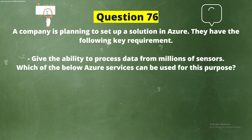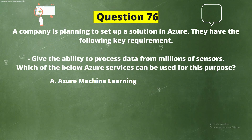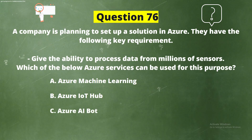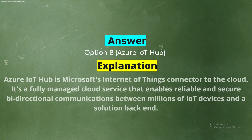Question 76: A company is planning to set up a solution in Azure. They have the following key requirement: give the ability to process data from millions of sensors. Which of the below Azure services can be used for this purpose? Options: A) Azure Machine Learning, B) Azure IoT Hub, C) Azure AI Bot, D) Azure Functions. The correct answer is option B, Azure IoT Hub.